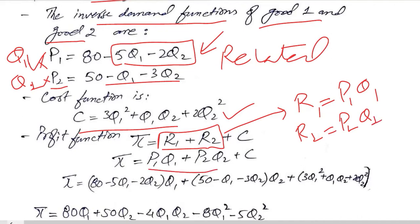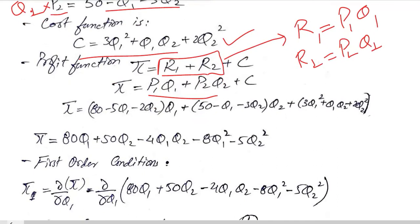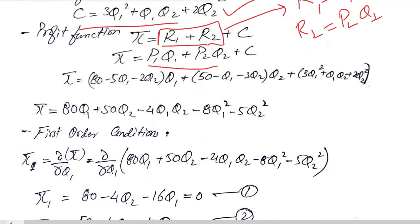So we have explained these two terms, R1 and R2, and now we can calculate the profit function. This would be revenue 1, this would be revenue 2, this would be the cost.